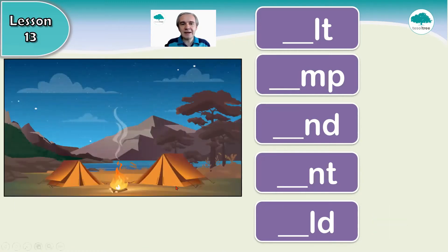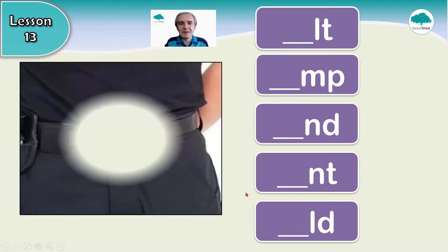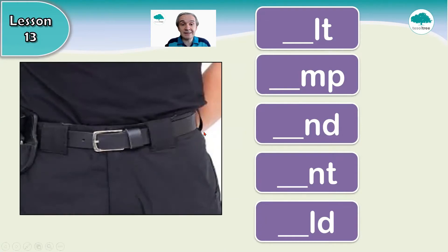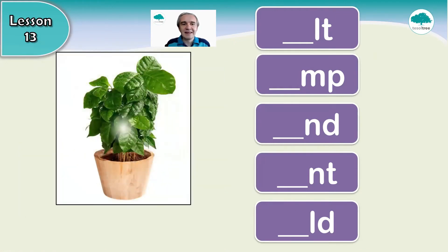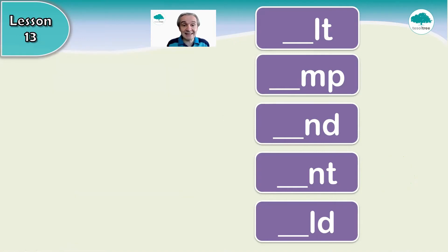Okay, where we can sleep outside — do you remember this one? It is camp, the MP sound. And this one — you can wear it. It is belt, LT. And this one, maybe inside your house — do you remember? It is plant, ND.